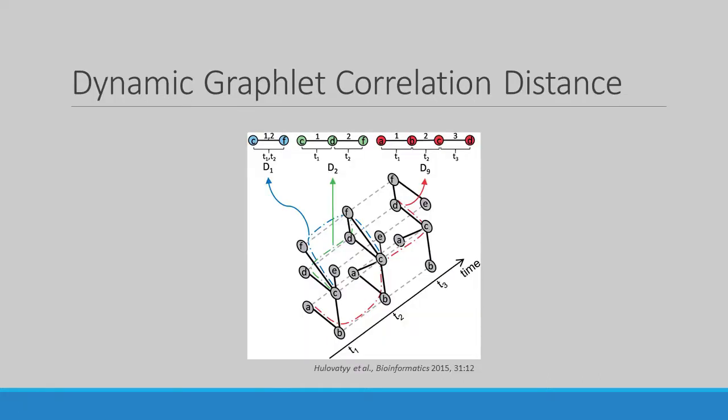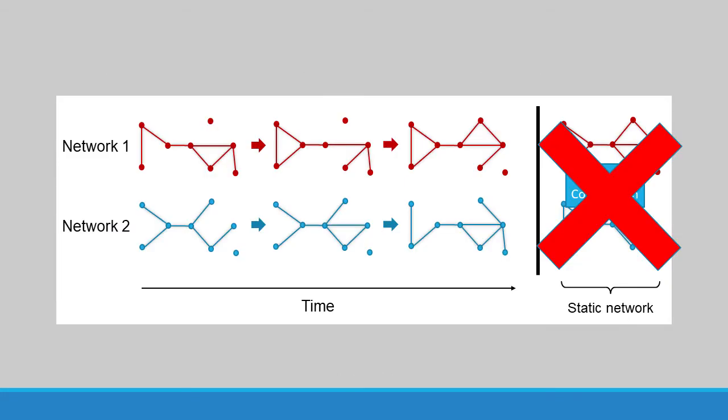Instead of static graphlets, dynamic graphlet correlation distance uses dynamic graphlets to examine the structure of temporal networks. This eliminates the need to aggregate temporal networks into a single static network, and reduces the chance that the method of comparison will falsely classify two networks as similar when they're temporally different.